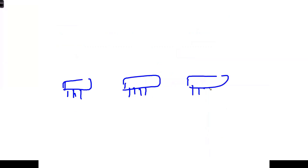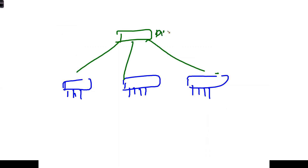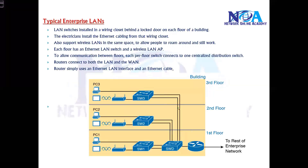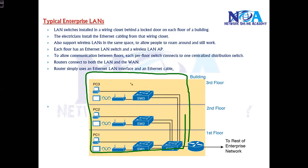Typically, you have a switch on each and every floor, and all of these floors connect to the centralized distribution switch. This is a distribution-level switch. You may also have direct connections between floor switches, or you can connect them all to the centralized distribution switch. This makes up the complete LAN, where you might be connecting hundreds of devices in the building.